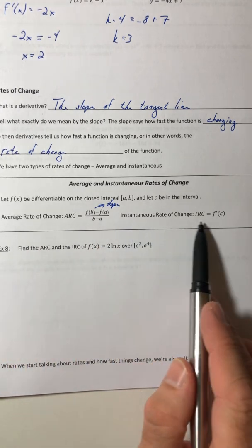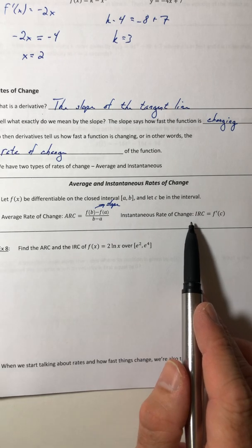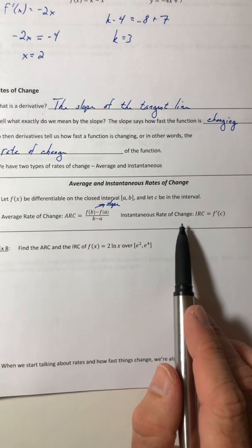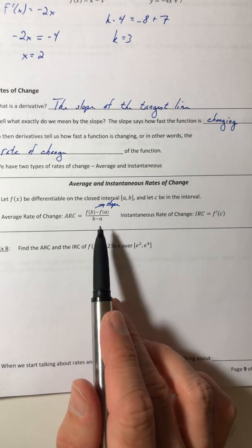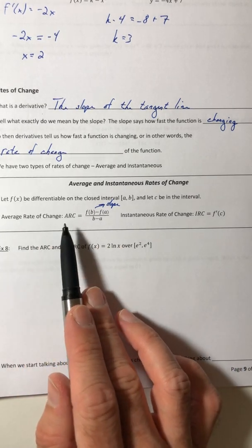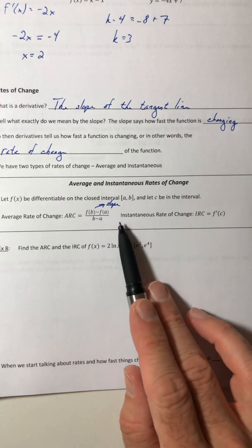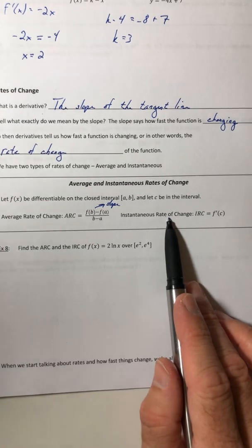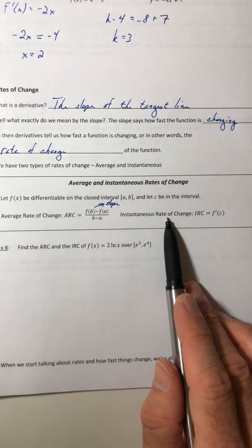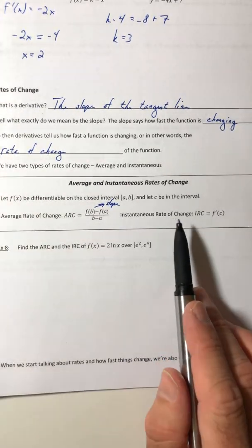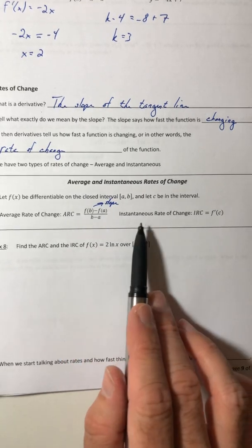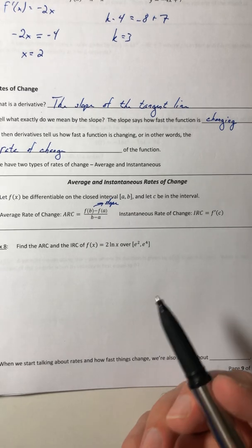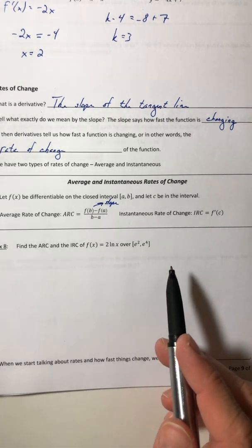Most people, if they didn't take the freeway, probably like 40 miles an hour or so. So on average, 40 miles per hour. Well, the instantaneous would be how fast you're going at a particular moment in time. So if it took you like 30 minutes to get to school, your average speed would be 40 miles an hour. But let's say at 10 minutes, how fast are you going right then? Or at 20 minutes, how fast are you going right there? So that's the difference between the two. Average looks at the whole interval. Instantaneous looks at a very specific moment in time.